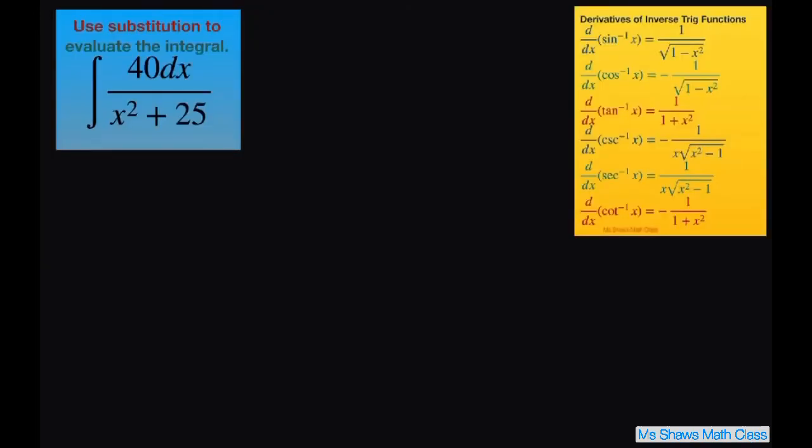Now this has the form of inverse tan here. So we're going to make it look like that. And to do that I can write let u equal x divided by 5. And that way 5u is going to equal x when you cross multiply.